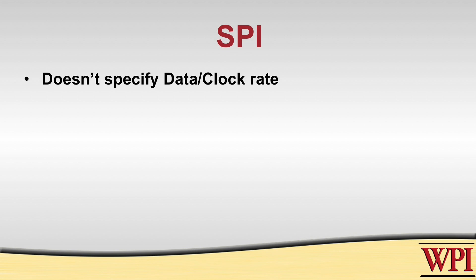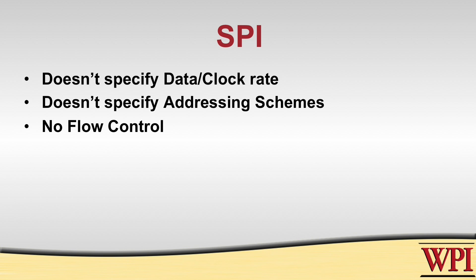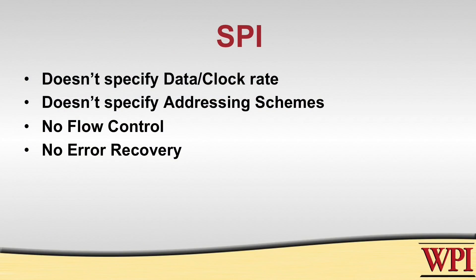The SPI protocol is very loosely defined. It does not specify things such as the clock rate or data rate. It does not specify addressing schemes other than the slave select line. There's no flow control and no error recovery — all those things are up to you to add on if you wish. The SPI protocol does not even specify voltages, so whether you're using 3.3 volts or 5 volts is entirely up to the devices you're working with. In conclusion, SPI is a very lightweight protocol that's easy to use. It requires a minimum of four data lines for a single master and slave, and an additional line for every additional slave.